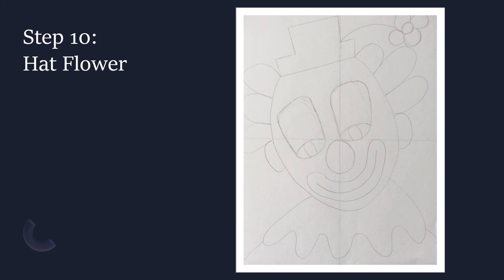Step ten: the last thing we're going to draw is a hat flower. For this, draw a curved line coming from your hat, and at the end of the line draw a small circle encompassed by four or however many semi-circles, or humps, you want to create the flower petals.